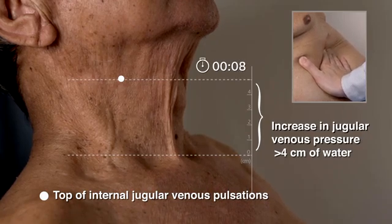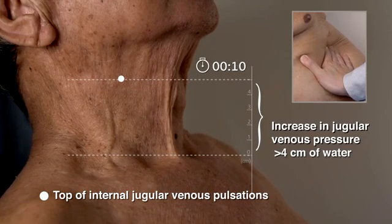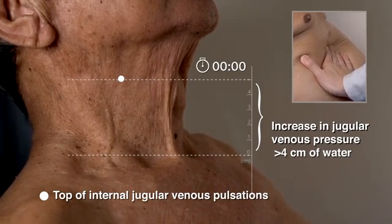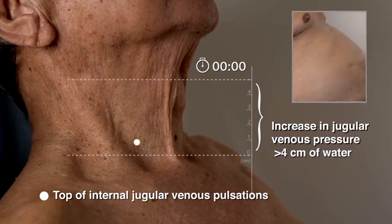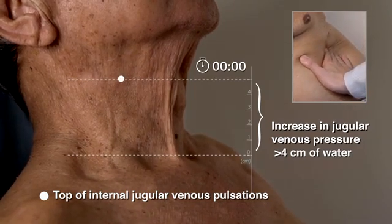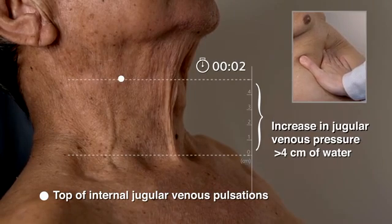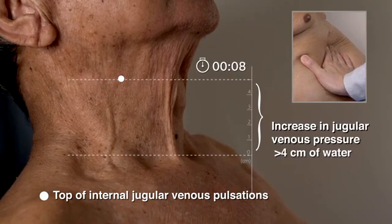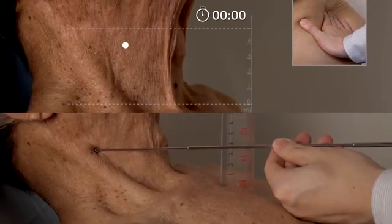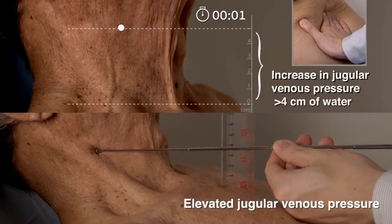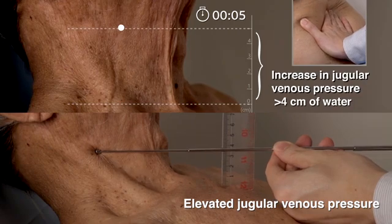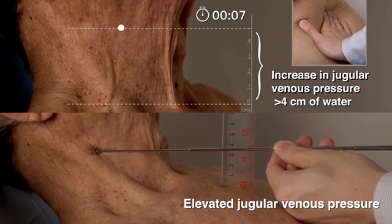An abnormal abdominal jugular reflux test result indicates that the right atrial pressure is elevated; such a finding in a patient with dyspnea indicates heart failure on the right side. A normal abdominal jugular reflux test result decreases the probability that the patient has elevated filling pressure on the right side of the heart. When the abdominal jugular reflux test and jugular venous pressure are combined, they are 80% sensitive and 81% specific for the detection of elevated right atrial pressure.